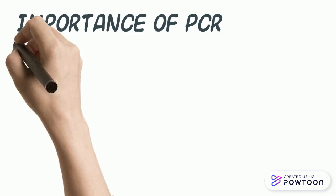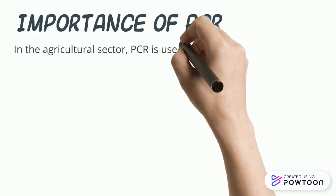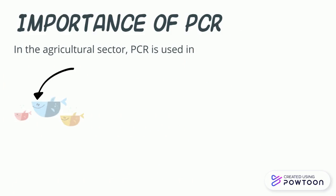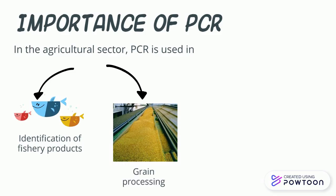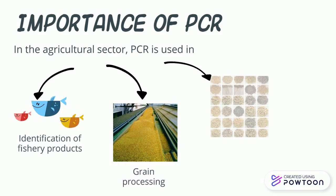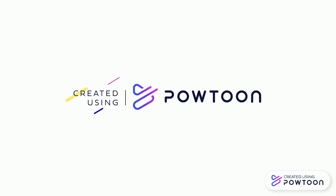Lastly, in the agriculture sector, PCR is used in development and identification of fishery products, grain processing, and identification of rice cultivators.